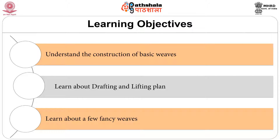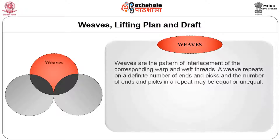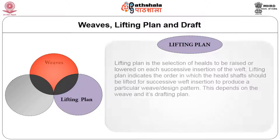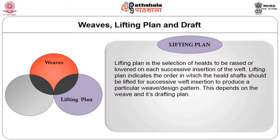The learning objectives of this module are to understand the construction of basic weaves, to learn about drafting and lifting plan, and to learn about a few fancy weaves. Weaves are the pattern of interlacement of the corresponding warp and weft threads. A weave repeats on a definite number of ends and picks, and the number of ends and picks in a repeat may be equal or unequal. Lifting plan is a selection of heels to be raised or lowered on each successive insertion of the weft, indicating the order in which the heel shafts should be lifted to produce a particular weave or design.